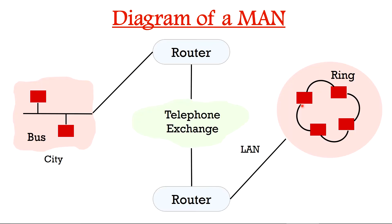Data transmitted over a fiber optic cable cannot be snooped with a radio frequency detector as copper wires can. A typical MAN network connects one city network to another. Earlier, public switched telephone networks were mainly used for interconnecting LANs within a city, supporting packet-based data exchange. However, as technology evolved, fiber optic cable was introduced — single-mode fiber optic cable replaced the public switched telephone network.